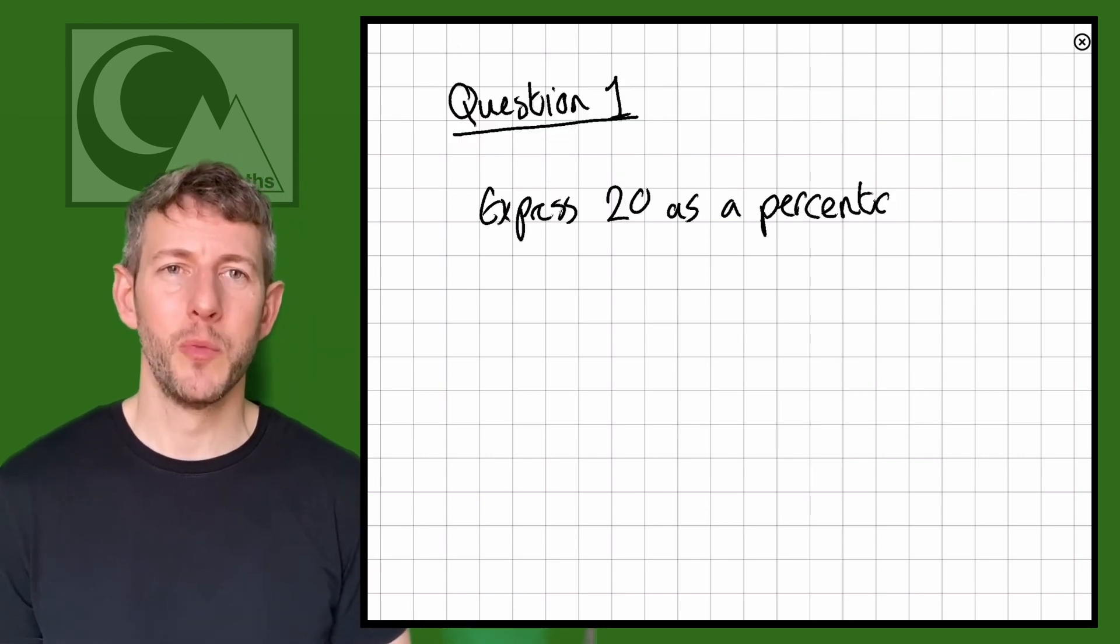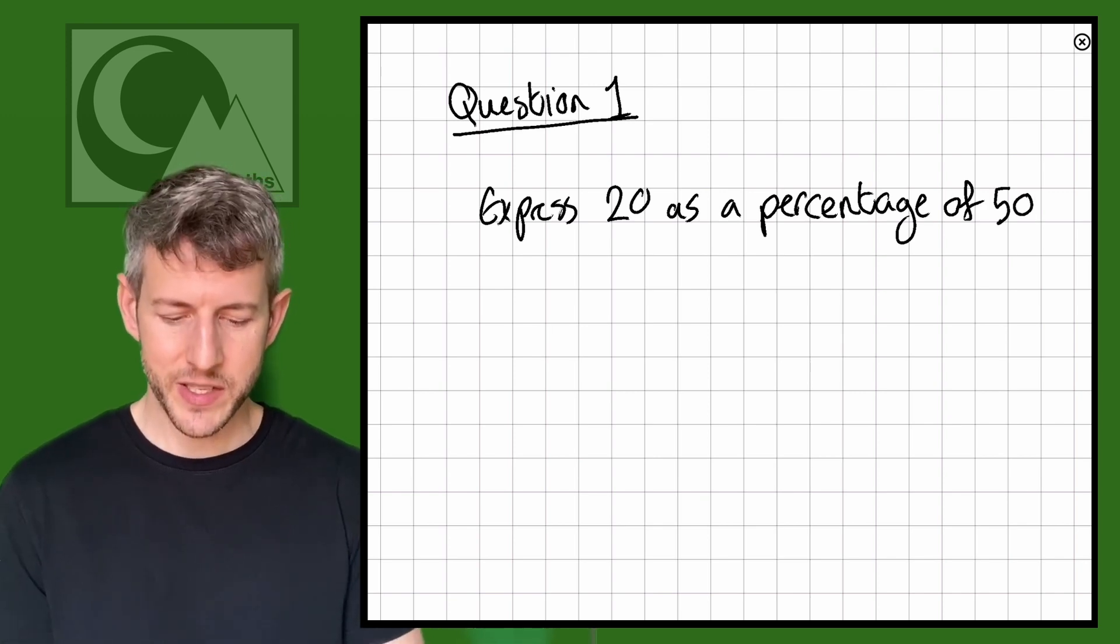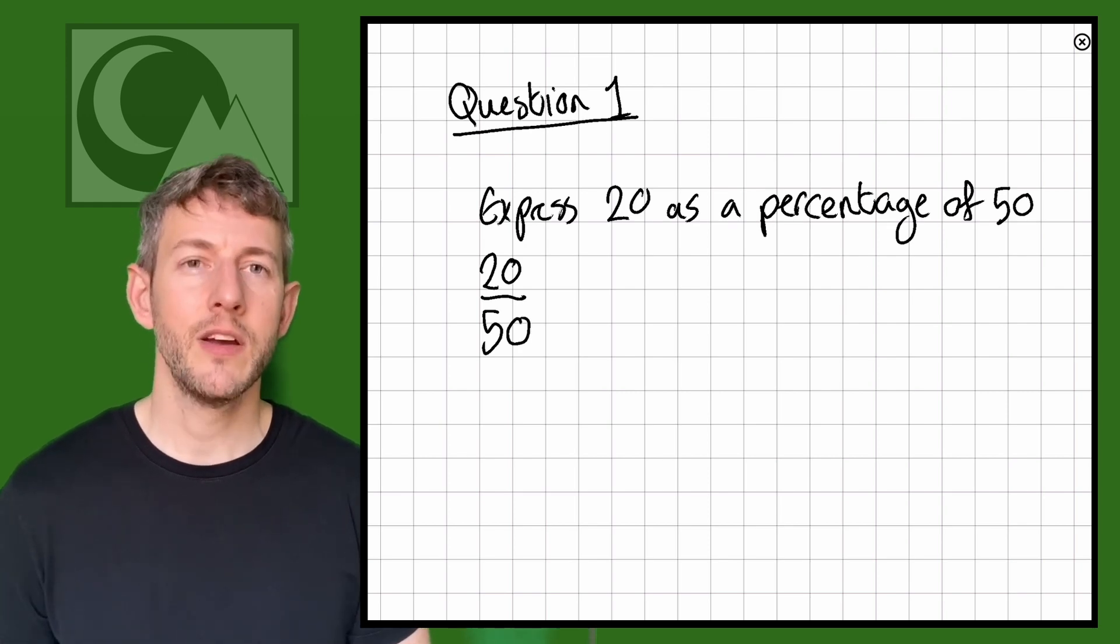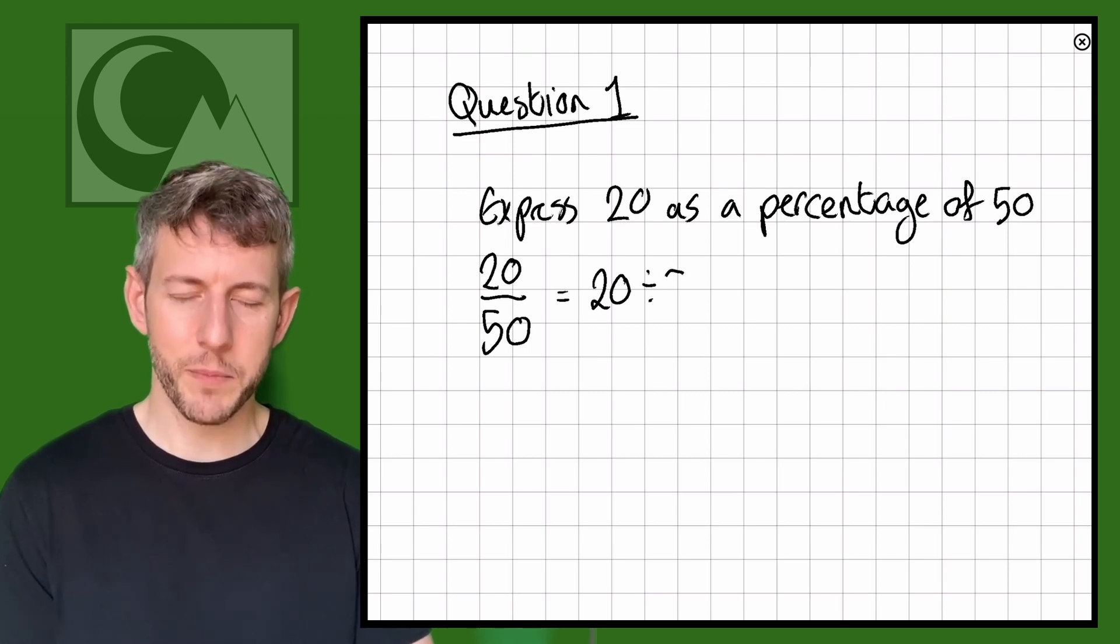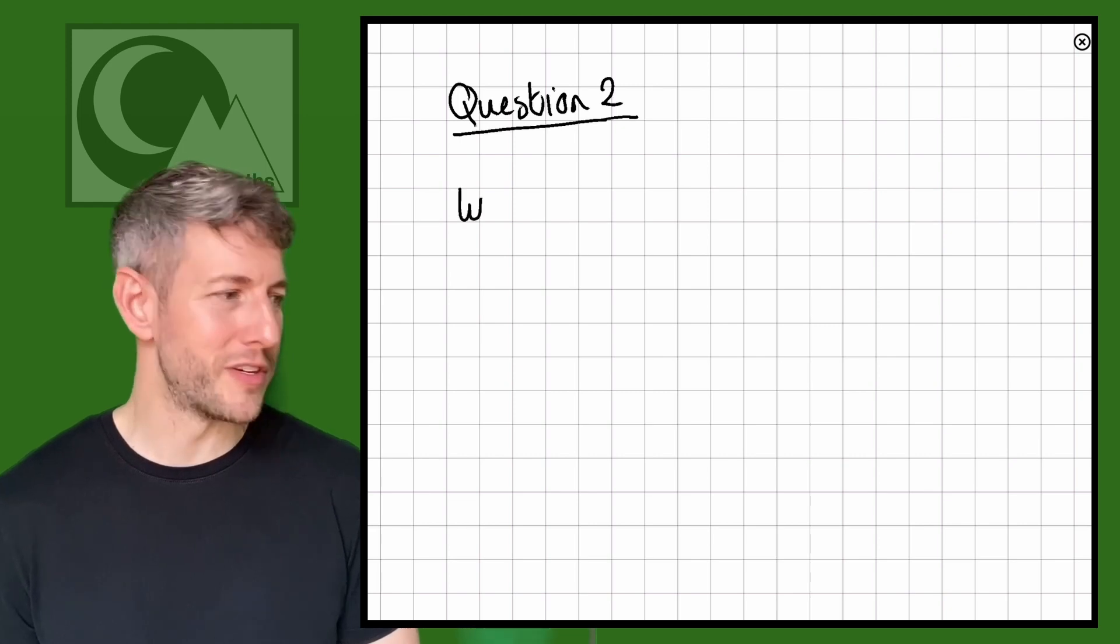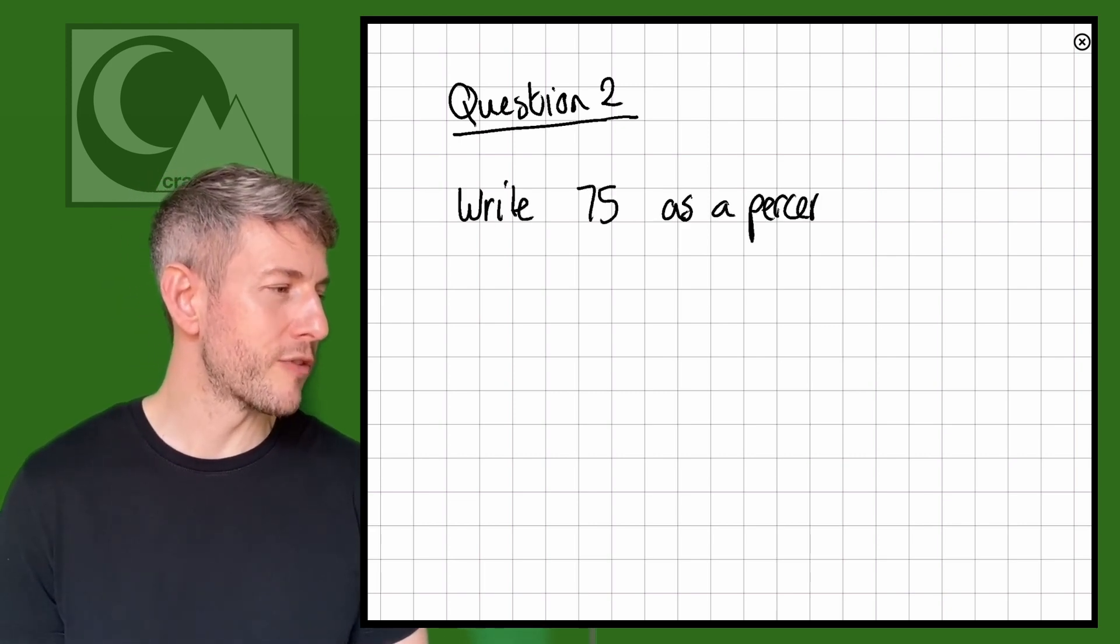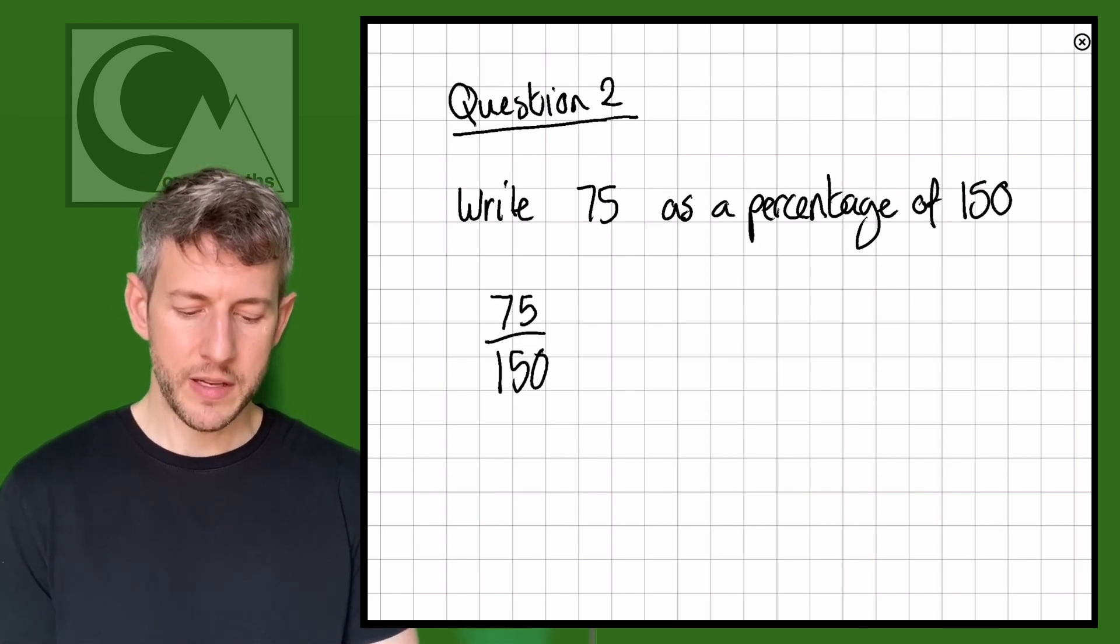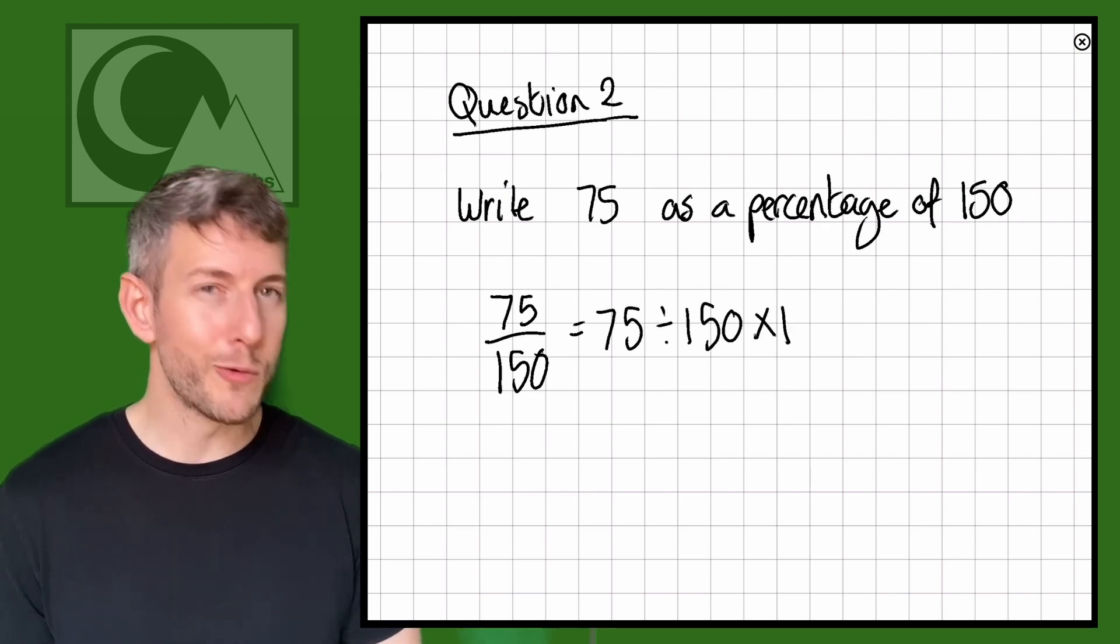So let's have a look at question 1. So here we have 20 as a percentage of 50. So remember, it's 20 over 50 is the fraction. So that's going to be 20 divided by 50 multiplied by 100, so that is 40%. Let's look at question 2. We've got 75 as a percentage of 150, so that's 75 out of 150. So 75 divided by 150 times 100, and that equals 50%.